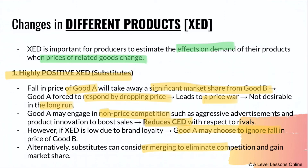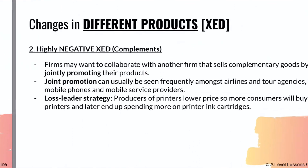For example, if Nike drops its price, many people buying Adidas will switch to Nike. As a result, Adidas may want to drop their prices too — but a price war, where prices keep falling, is not desirable. If XED is low, both companies may choose to ignore each other; if XED is high, they will focus on non-price competition to regain brand loyalty. Substitutes can also consider merging or acquiring one another.